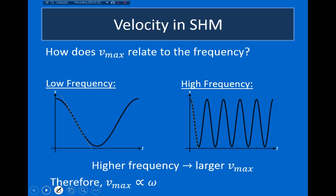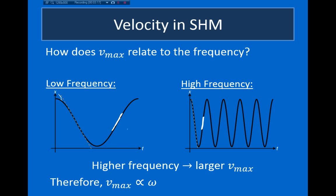So let's first look at the frequency. On the left I have the position versus time of some object undergoing simple harmonic motion at a very low frequency, and on the right I have an object undergoing simple harmonic motion with the same amplitude but at a much higher frequency. Recall that velocity is equal to the slope of the position versus time graph, so we want to see how the maximum slopes of these two things relate. We can see that the high frequency graph is much steeper than the low frequency graph, meaning the maximum velocity when I have a higher frequency is a larger velocity than when I have a low frequency. So we expect that the maximum velocity will be proportional to the angular frequency — the higher the frequency, the larger the maximum velocity.